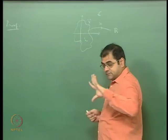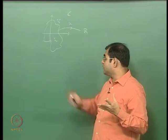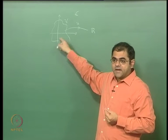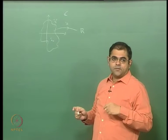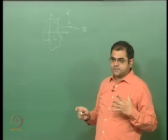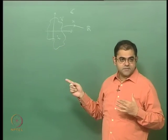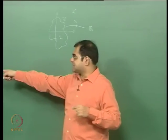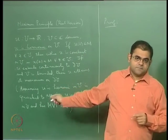The approach is to prove the contrapositive: if u assumes the value M at a point inside, I will show u is constant. The contrapositive then says that if u is not constant, it cannot assume the value M at any interior point, so u of z will always be strictly less than M everywhere inside.